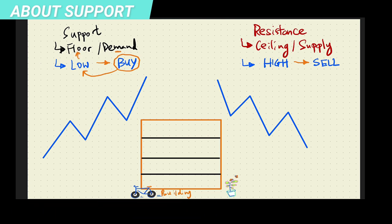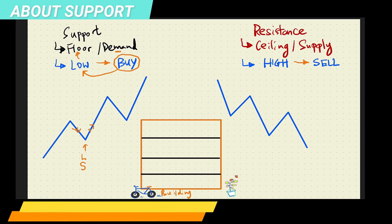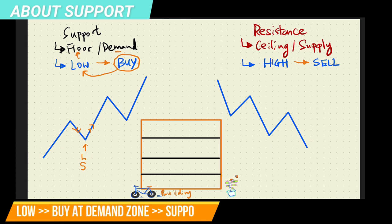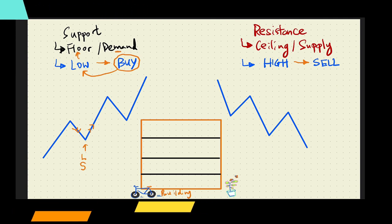Let's take a look at the example. As price moves up, you hit a high point. When price starts to move down, you see that this is a low point. Subsequently, price moves up and therefore we can conclude that this is a zone of support. People are looking to buy and the buy action results in price going up — because it's near a floor, there's demand, and therefore price goes up.